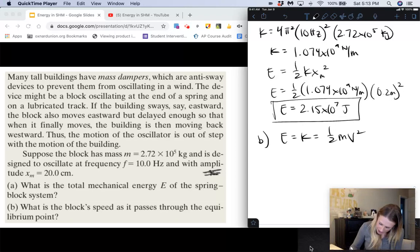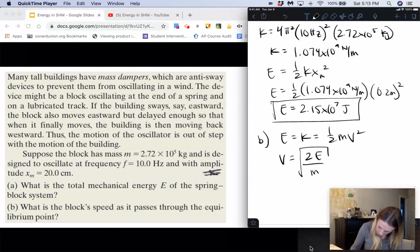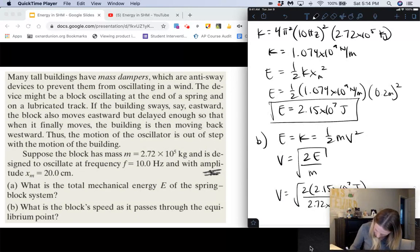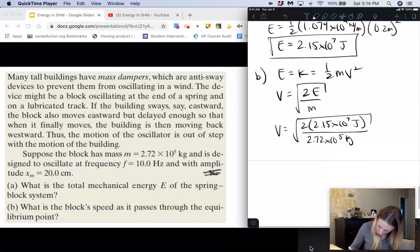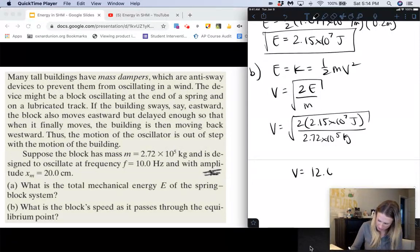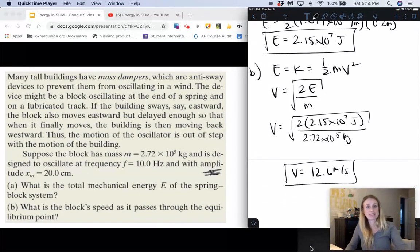So here solving for velocity, we get velocity is equal to 2 times the total energy, which we just found, divided by mass square root of all that. So velocity is equal to the square root of 2 times 2.15 times 10 to the 7th joules, divided by the mass. No, that wasn't the mass. The mass was 2.72 times 10 to the 5th kilograms. So for velocity, we end up getting about 12.6 meters per second for our velocity at the equilibrium position.